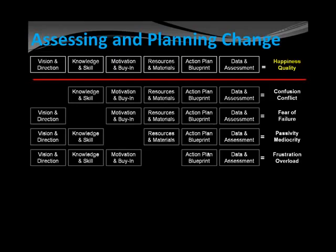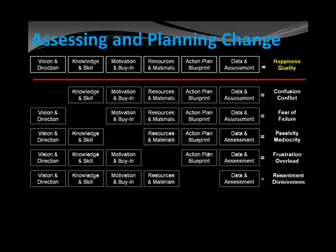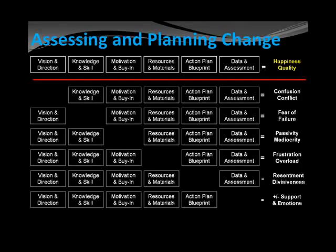Frustration and overload is a lack of resources and materials — keeping in mind that not only is money a resource, time is also a resource. When we have resentment or divisiveness, it's because we don't have an action plan or a blueprint. And lastly, when we have the plus and minus of support of a program or an approach or a process, it usually is because we don't have the data and assessment to tell us how we're doing.